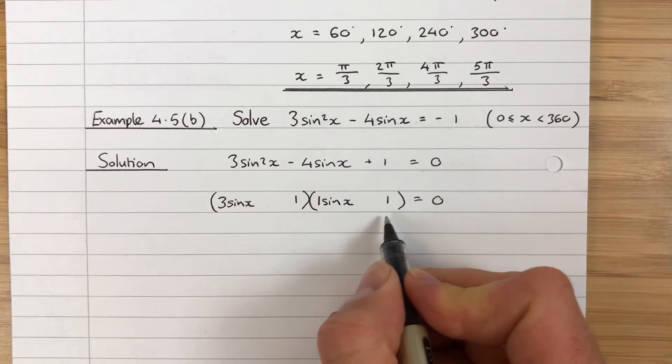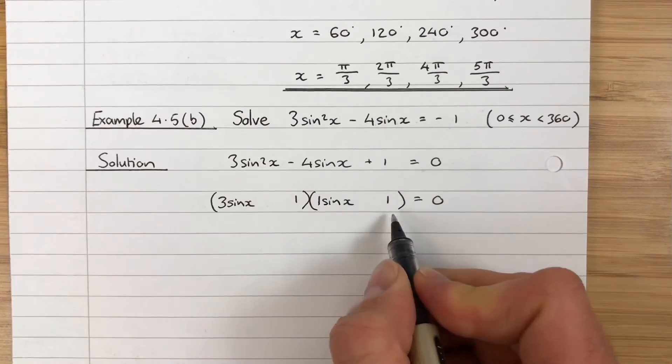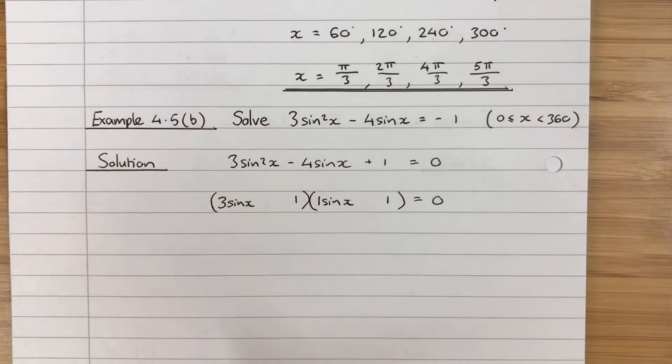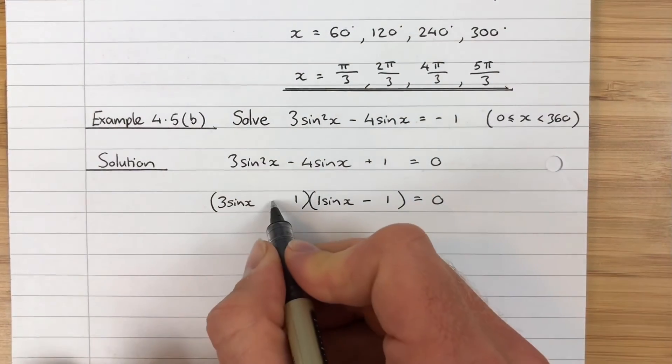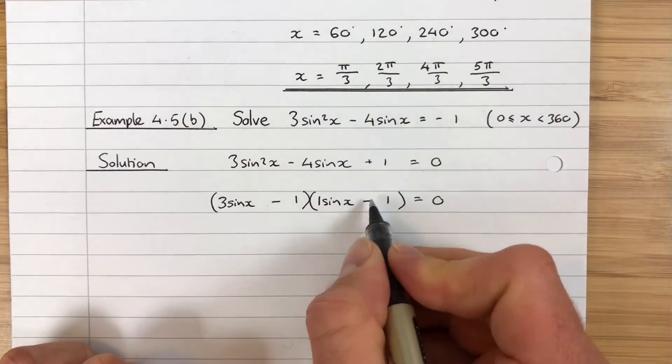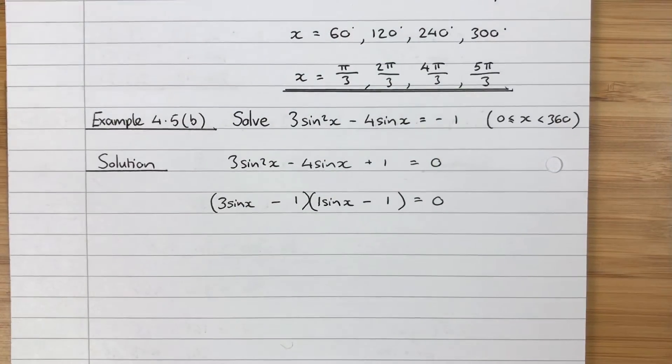This would give me 3sin x, this would give me 1sin x. So I've got 3sin x and 1sin x. How do I get to -4? Well I would subtract the 3sin x and also subtract the 1sin x. And a minus times a minus gives me a plus. We factorised that correctly.